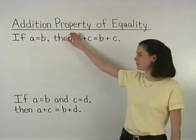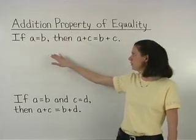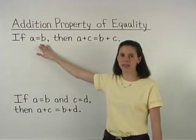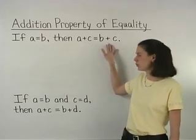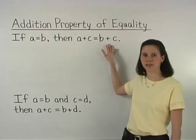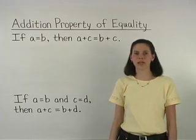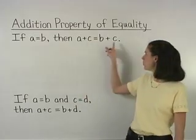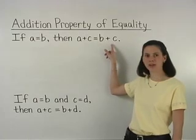The addition property of equality states that if A equals B, then A plus C equals B plus C. In other words, we can always add the same quantity to both sides of an equation.